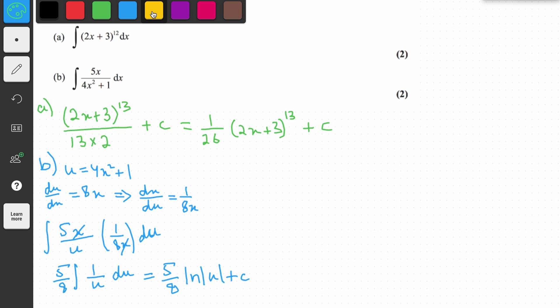Now let's look at the other method to do the same question. What we do is we check whether the numerator is the differential of the denominator, and we can only use this method if this is true. So the denominator is 4x² + 1. When we differentiate it we get 8x, and the numerator is 5x. Even though it's not exactly the same, we can adjust it by just using constants.